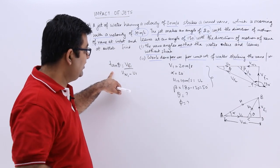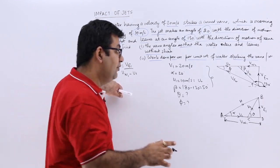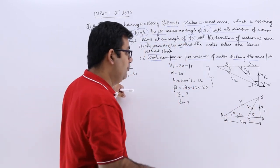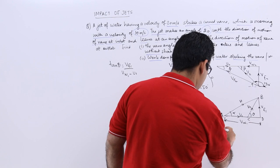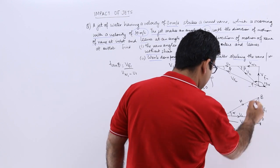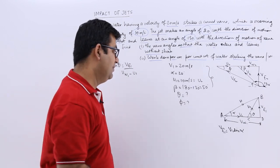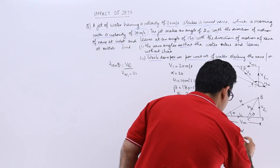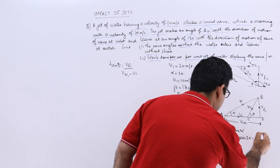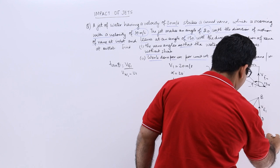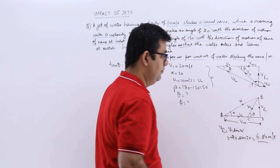Now what is VF1? VF1 in terms of V1, VF1 is the sin component. So VF1 is V1 sin alpha, which becomes 20 sin 20 degrees. So this value of VF1 would be 6.84 meters per second.